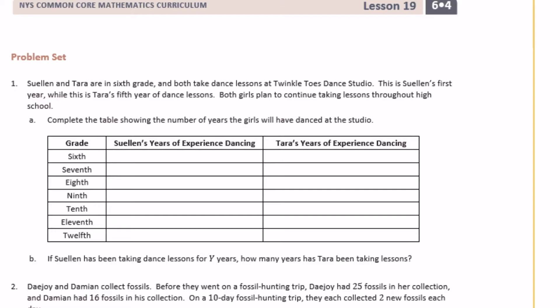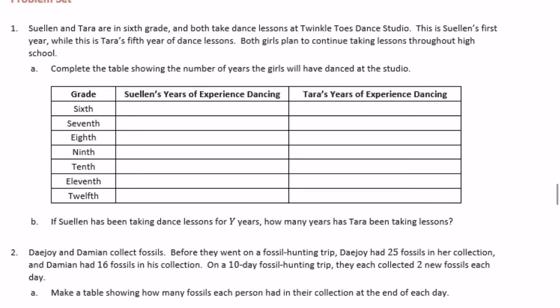Sixth grade module 4 lesson 19 problem set, number one. Sue Ellen and Tara are in sixth grade and both take dance lessons at Twinkle Toes Dance Studio. This is Sue Ellen's first year while this is Tara's fifth year. Both girls plan to continue taking lessons throughout high school. In sixth grade, Sue Ellen's years of dance experience would be one while Tara's are five.